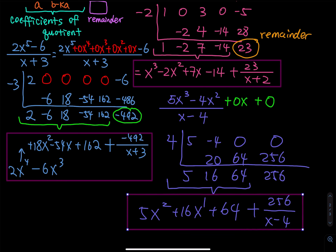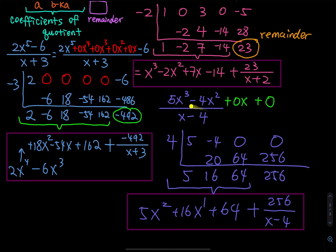Before I end this video, what is the difference between long division and synthetic division? For synthetic division, you can only divide by a binomial — x minus 4, two terms only. But if you have x squared minus 4, you have to use long division. In calculus 1 and calculus 2 you will use long division. So after this class, just do long division — but you have to know that synthetic division exists. If you like the way I teach, give me a thumbs up or subscribe, and I will meet you in the next lesson.